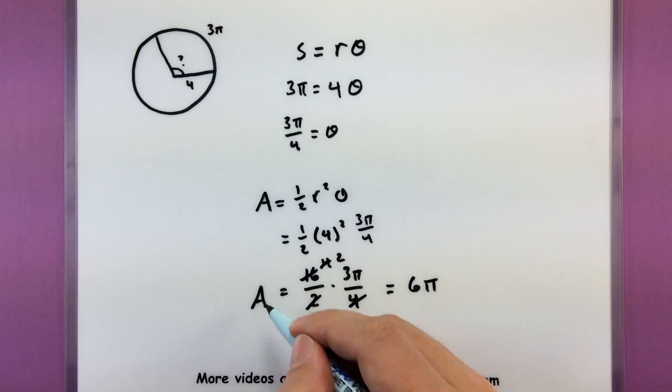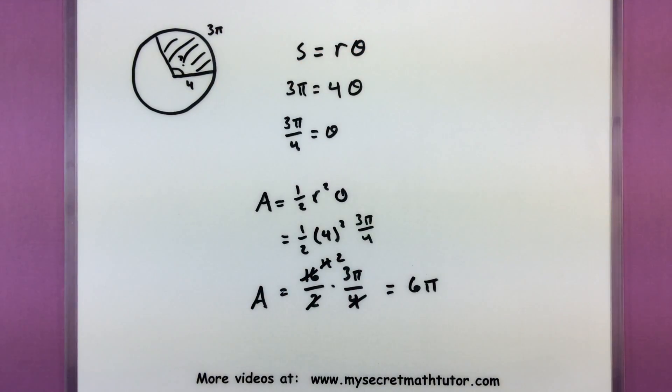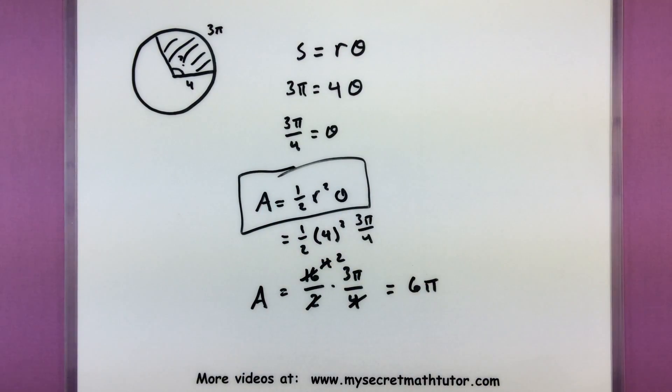So again, that represents the area of this portion of the circle right up there. Not too bad. So if you haven't already done so, maybe start memorizing that formula. It is kind of handy when making those connections. And of course, if you'd like to see some more videos, please visit MySecretMathTutor.com.